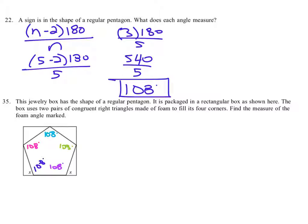If that's true, then they sum to 540 degrees. The relevant part is that the box uses two pairs of congruent right triangles made of foam to fill the corners. We're looking for this angle measure.